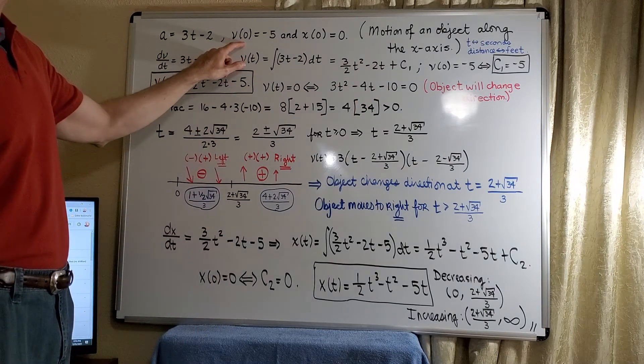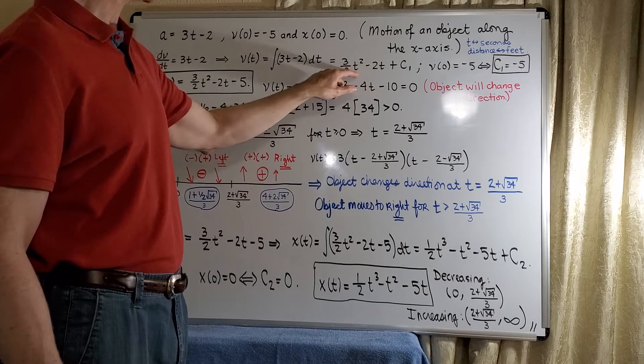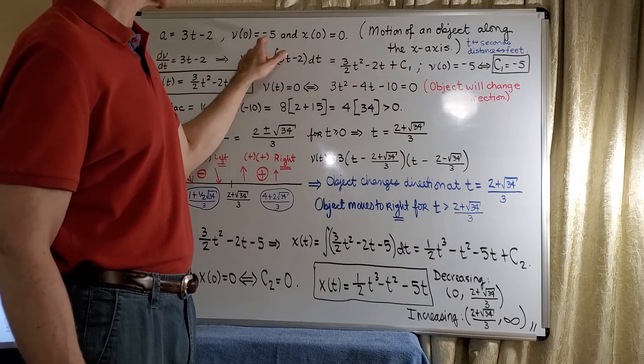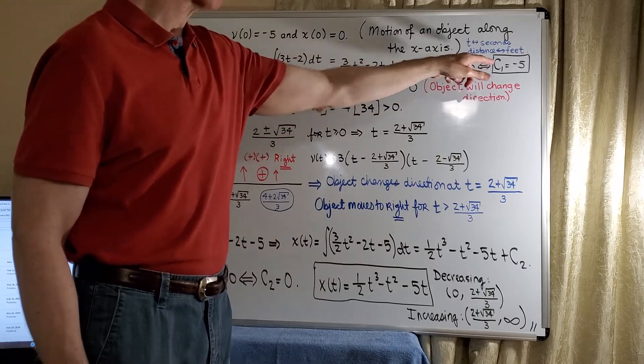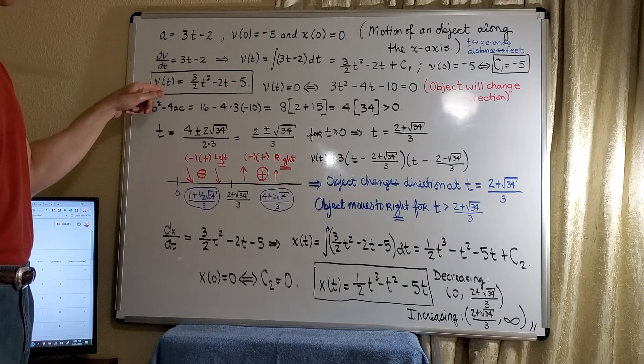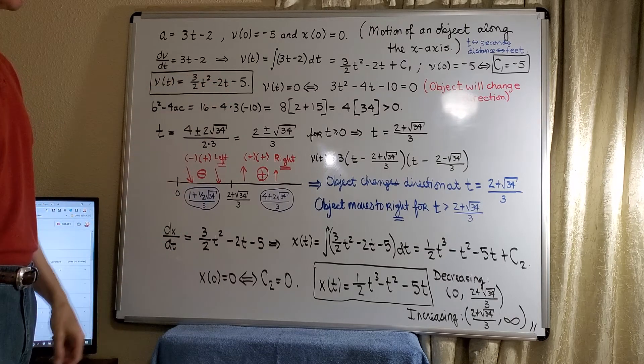We know that v(0) equals negative 5. So if we substitute 0 for t, all of these terms zero out, and we just have c1 is equal to negative 5. So we have the constant evaluated, and our function v(t) of velocity is 3/2 t squared minus 2t minus 5.